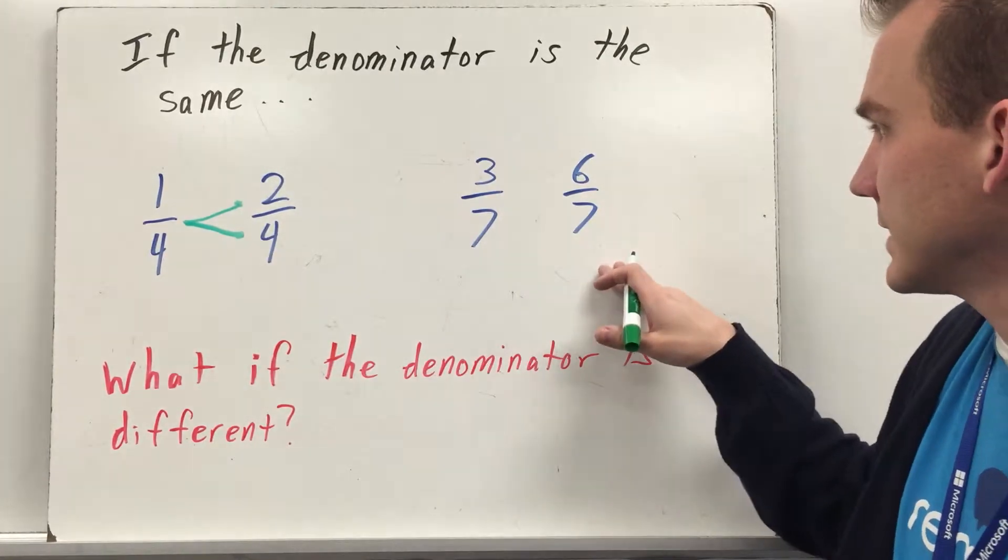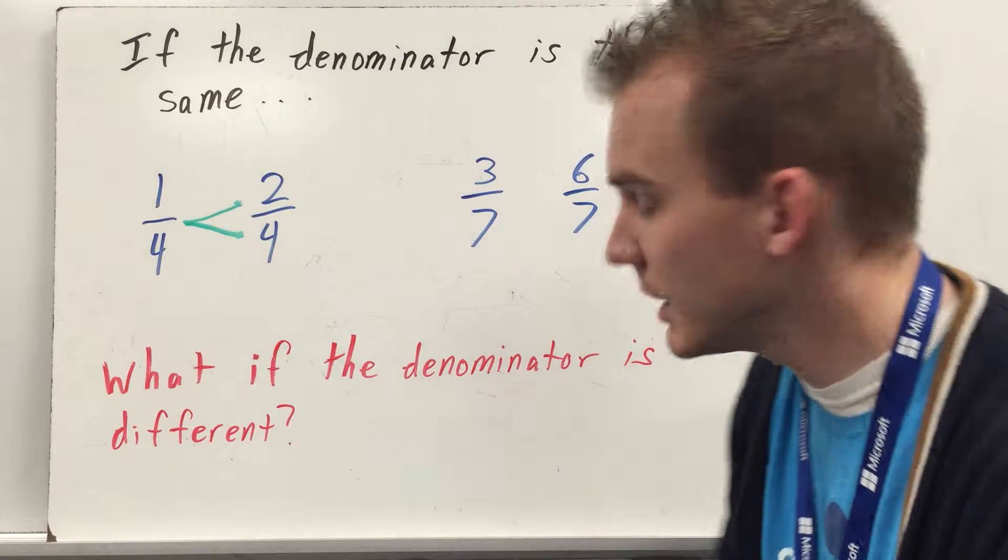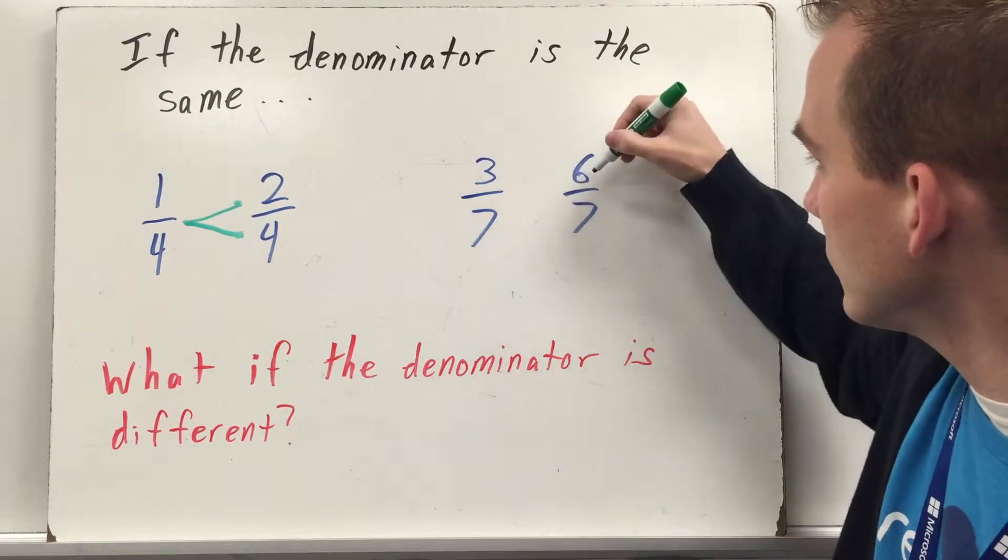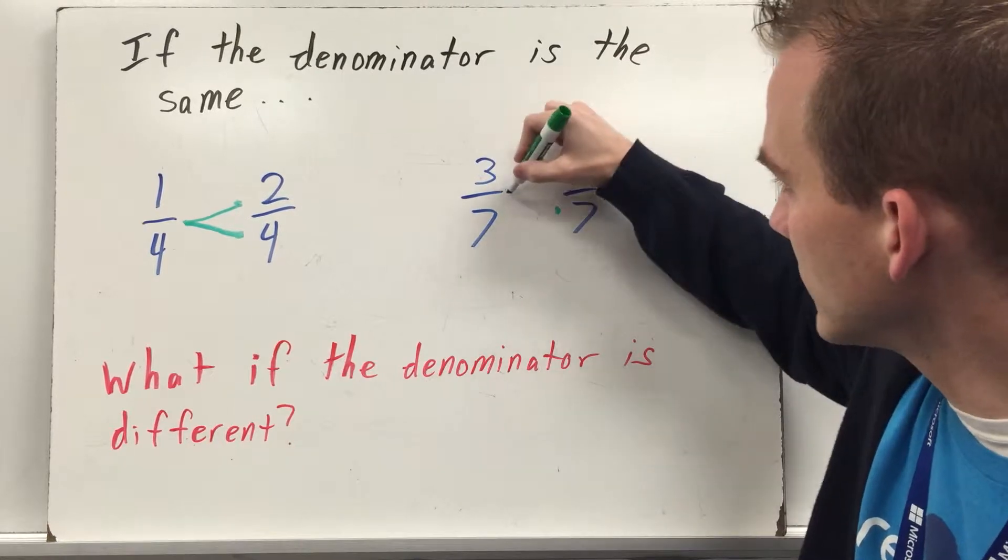So I have one-fourth is less than two-fourths. Over here you have three-sevenths compared to six-sevenths. I see my denominator is the same, so I'm just comparing my numerators. I see that six is greater than three, so this fraction gets two dots.